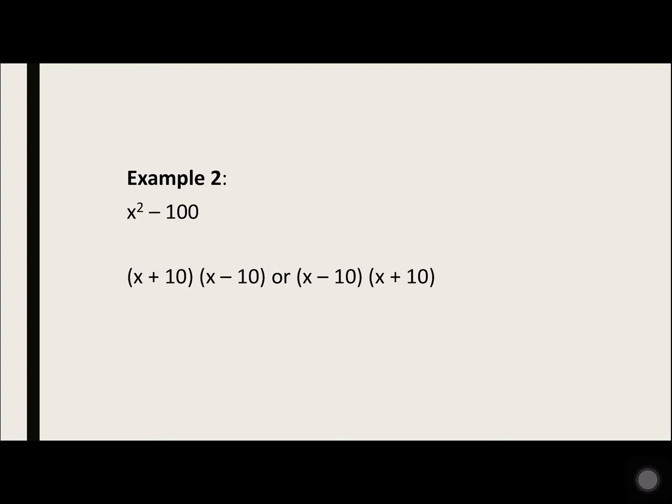Example 2: x squared minus 100. You have to break it down into what times itself. x squared is x times x, and 100 is 10 times 10. So you can have x plus 10 times x minus 10, or x minus 10 times x plus 10. Those are the same thing because it's the same problem, just the order switched.